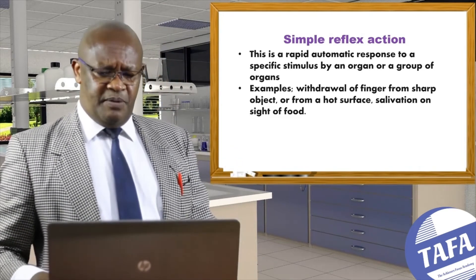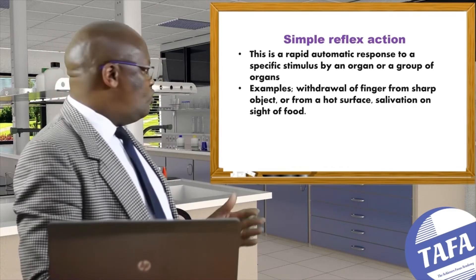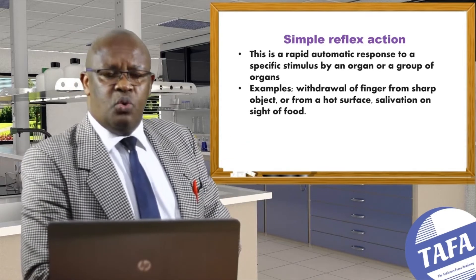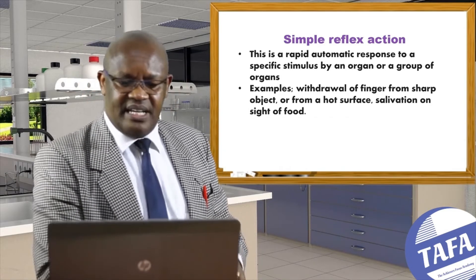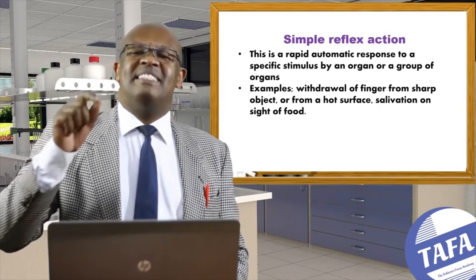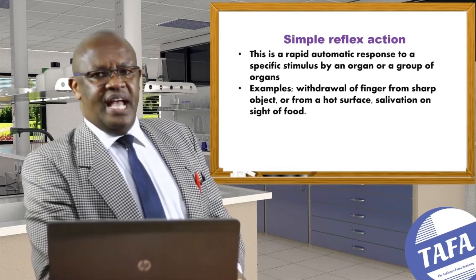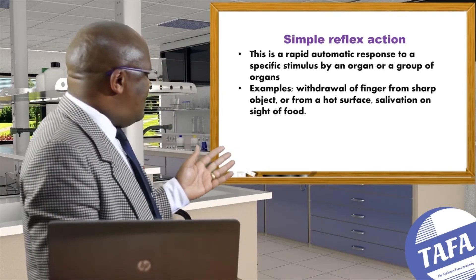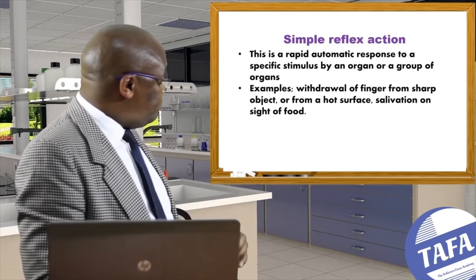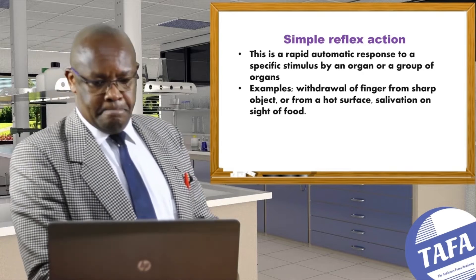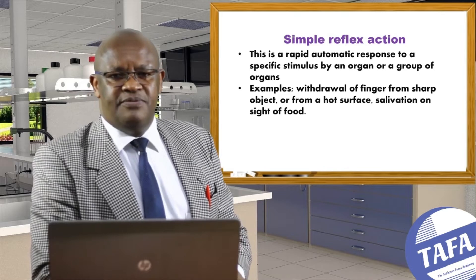Let's now think about simple reflex action. There are two types: simple reflex action and conditioned reflex action. Starting with simple reflex action — this is a rapid, automatic response to a specific stimulus in the environment by an organ or a group of organs in the body. There are several examples of simple reflex actions.